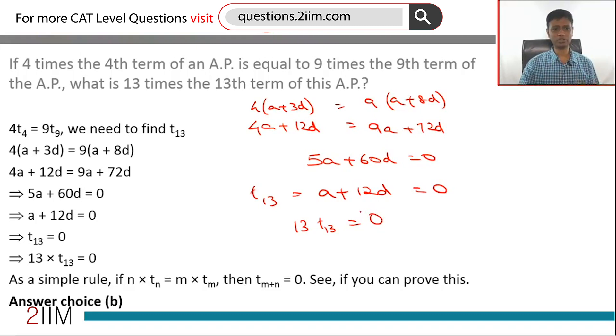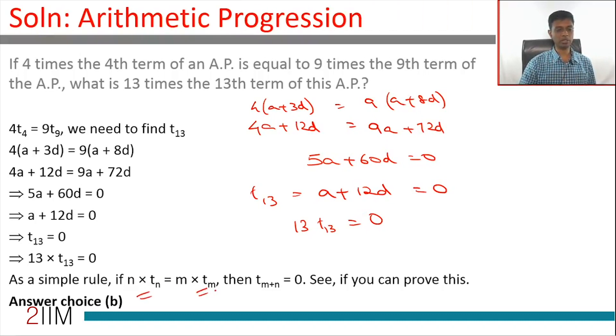The extrapolation of this, that is more interesting. If N times TN equal to M times TM, then the M plus Nth term is 0. See if you can do this. The same thing that we have done with numbers, we can do it algebraically, that is a very good simple insight to get.